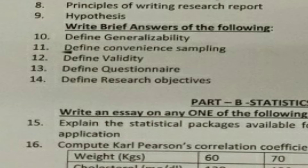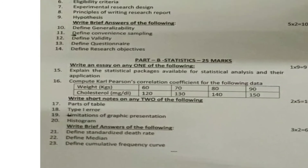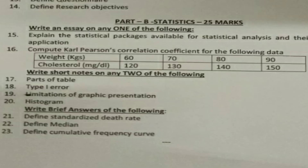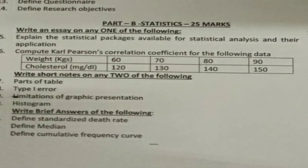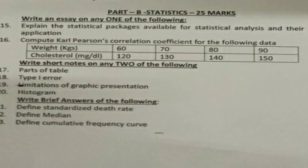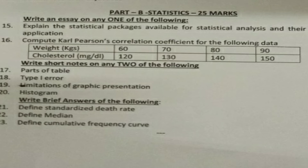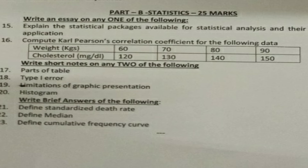These are all the questions in Part A — Nursing Research. Moving on to Part B, which is for 25 marks. Write an essay on any one of the following two questions, for 1 × 9 = 9 marks. Question 15: Explain the statistical packages available for statistical analyzers and their application. We have posted a detailed video on statistical packages in our channel playlist under BSc Nursing 4th Year Nursing Research and Statistics.